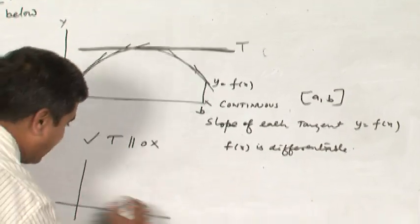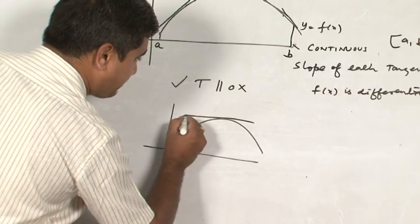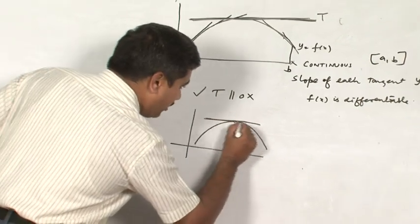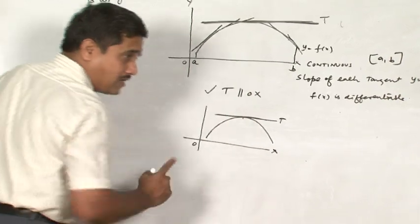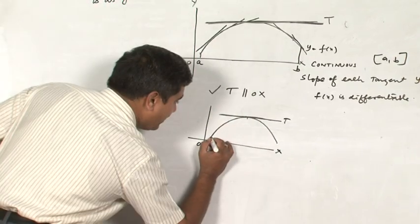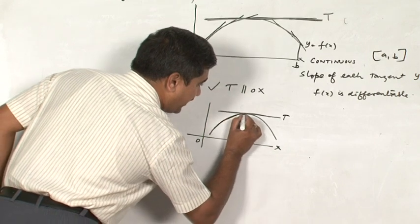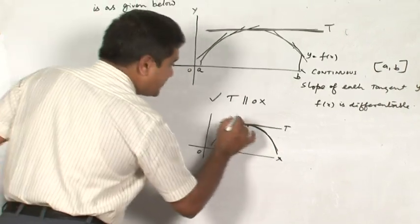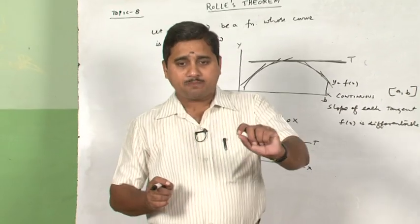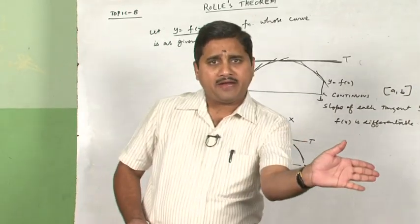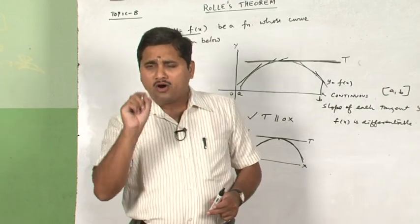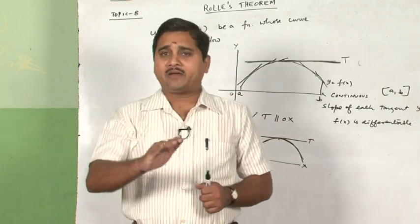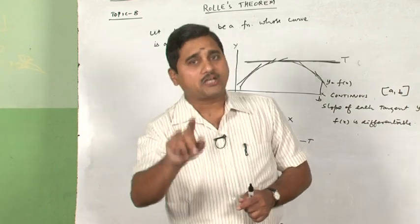Looking at the graph again, the point where the tangent is parallel to the x-axis has a typical character: from here the function is going continuously upward, and at this point onwards the function is likely to decrease. This is like driving a vehicle at high speed and finding a hairpin bend — you apply the brake for a moment, indicating the direction of the vehicle is likely to change.